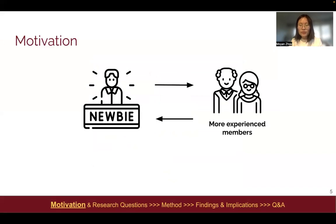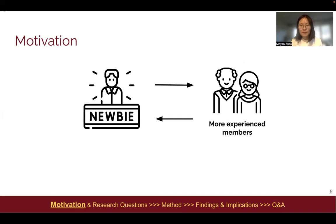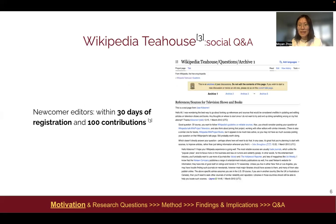One way to retain newcomers is through socialization with more experienced members. Researchers have developed tools to promote social interactions between newcomers and more experienced members. For example, Wikipedia Tea House, as we probably are familiar with it, is a social question and answer forum where newcomers can come and ask a question and get answered.